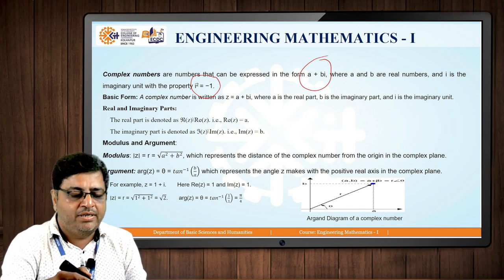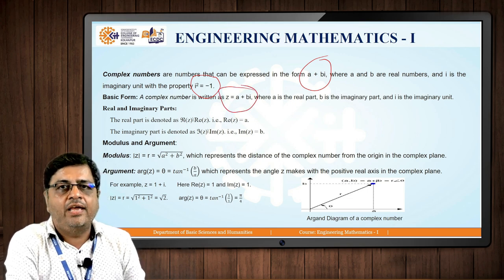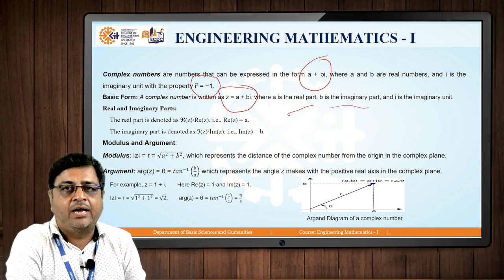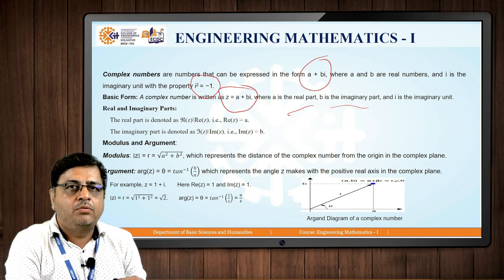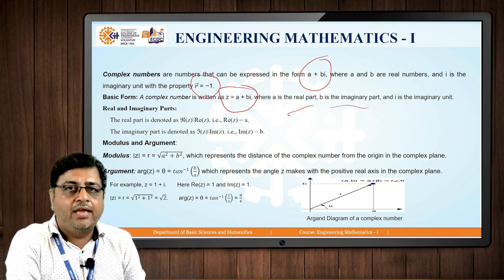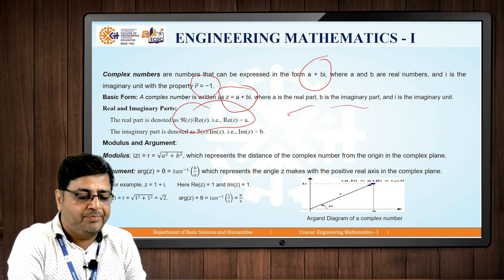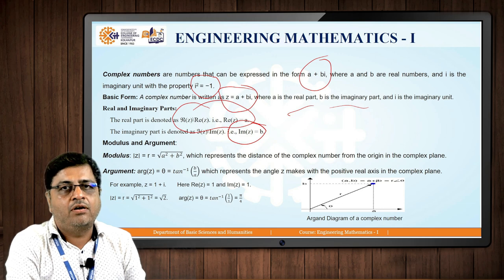Basically complex number is written as Z is equal to A plus B I, where A is the real part and B is the imaginary part. I is the imaginary unit. The real part of Z is written as A and the imaginary part of Z is written as B. So this is the notation for a complex number.